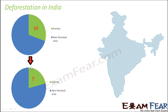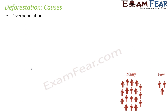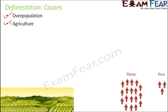Forests are our green lungs and serve so many purposes, so diminishing them will indirectly harm us. One major cause of deforestation is overpopulation — as population increases, needs also increase. People need more houses, so they cut down forests to establish human settlements. They also need more crops, so forested lands are converted into agricultural lands.